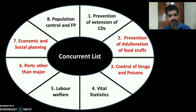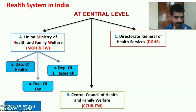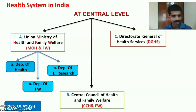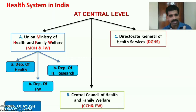A separate video on the functions of the Union List and Concurrent List with mnemonics is available for further reference. In summary, at the central level, the Union Ministry of Health and Family Welfare has three departments: Department of Health, Department of Family Welfare, and Department of Health Research. Its functions are listed under the Union List (nine functions) and Concurrent List (eight functions) of the Seventh Schedule of the Indian Constitution.